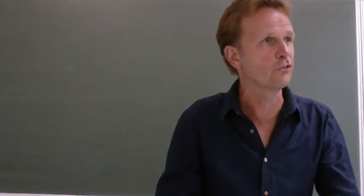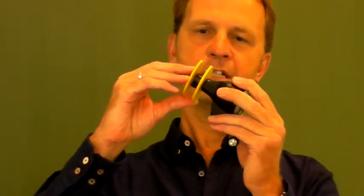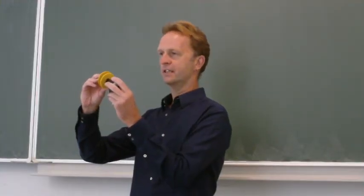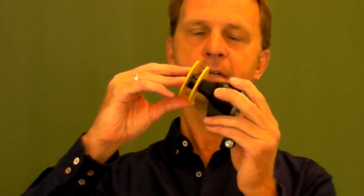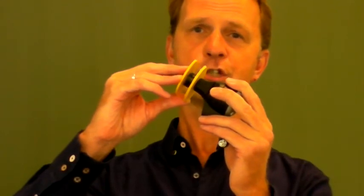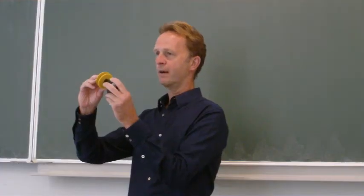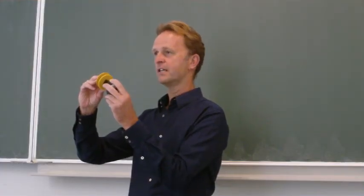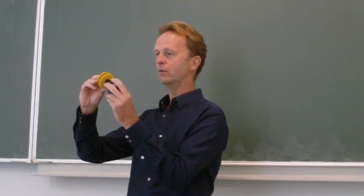In a bicycle dynamo, like this one, you will also find magnets and coils. Because some parts inside this dynamo are rotating, the magnetic field inside the coils changes all the time. And because this magnetic field changes, you get a voltage. In larger generators, like the ones inside a modern windmill, you've got the same principle and you also get a voltage.